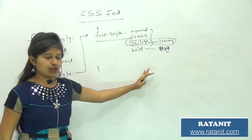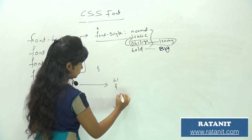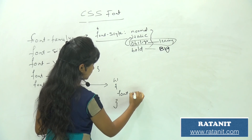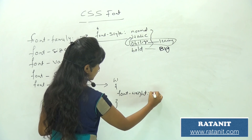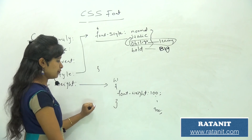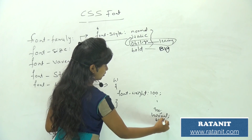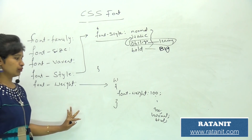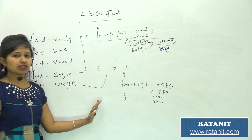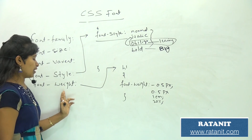Font weight can be specified from 100 to 900, or using keywords like normal or bold. These are the five font properties: font family, font size, font variant, font style, and font weight. Thank you for watching this video — for more videos please subscribe to our channel Ratan IT.